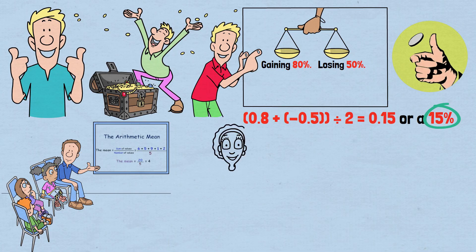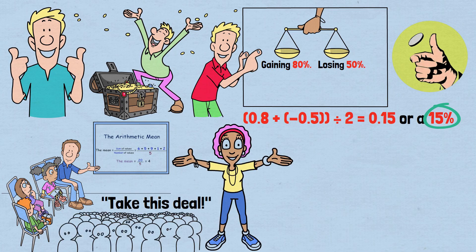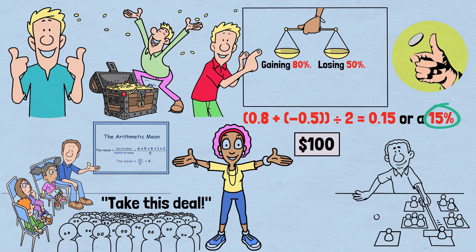15%. That's better than most investments. Logic screams, take this deal. So, let's imagine we gather a million people, each starting with $100, and have them play this game for 50 rounds. What would you expect to happen?